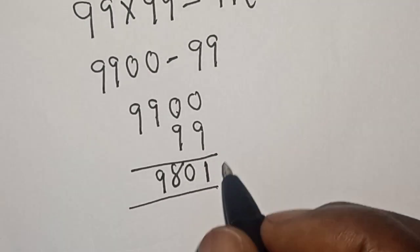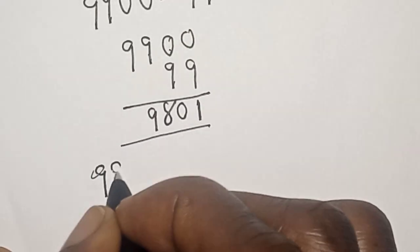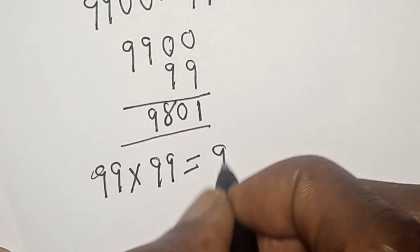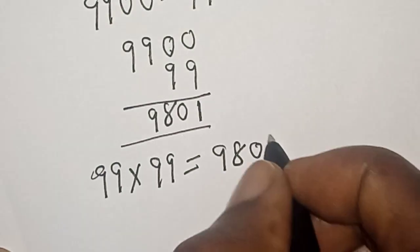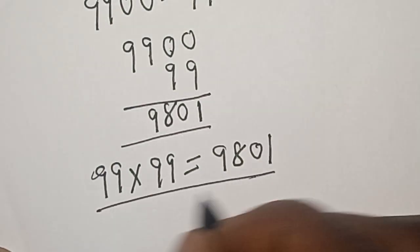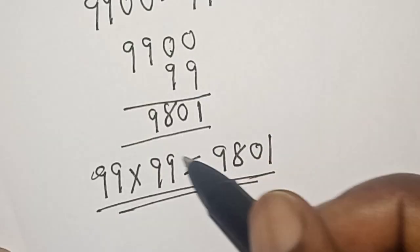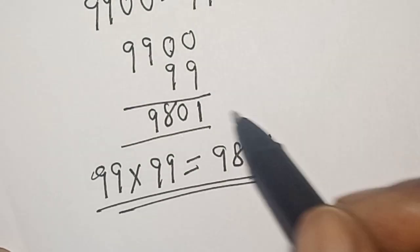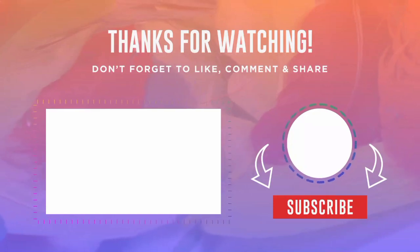Then our final answer is 99 × 99 = 9,801. That is our final answer. You can pick the method of your choice. If you enjoyed the class, please don't forget to like, share, comment and subscribe. Thank you.